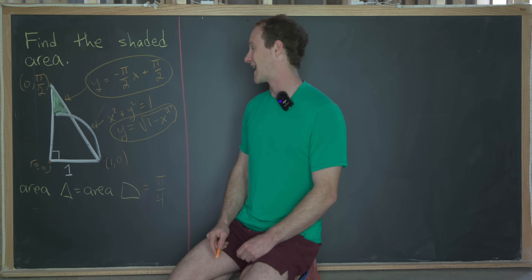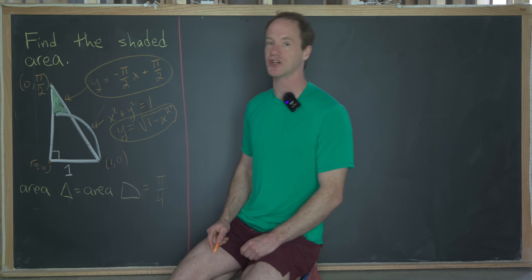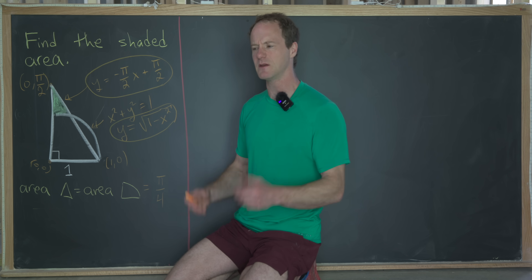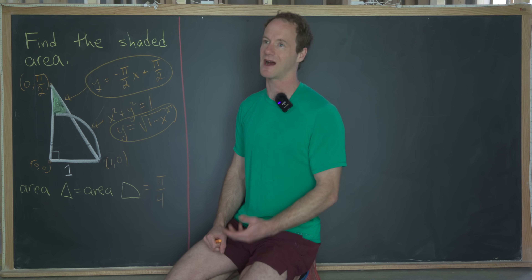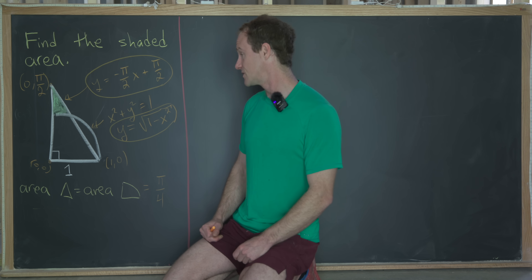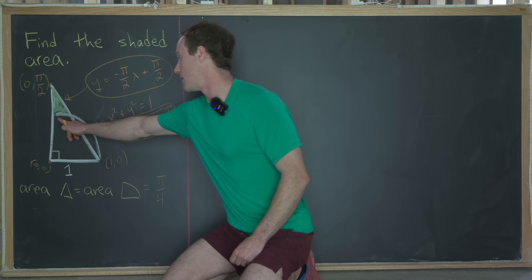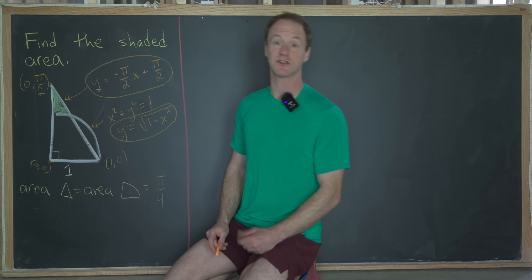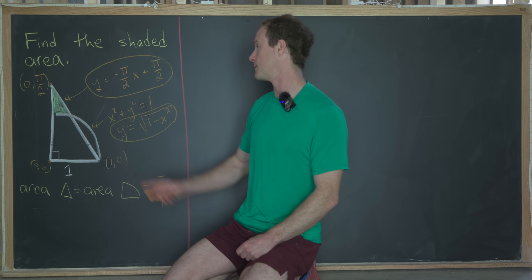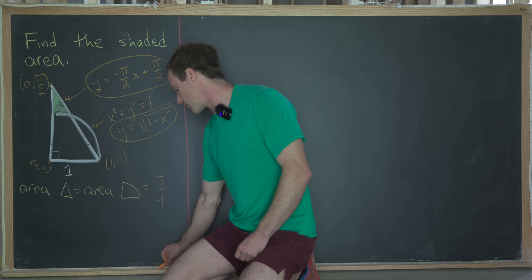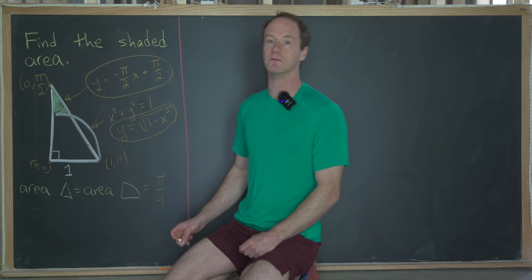Now we'll use calculus to find the shaded area. I know some of you will say calculus is overkill, but I think it's the right strategy here. We're going to integrate from zero to the intersection point of the top curve minus the bottom curve, so we need to find that intersection point first.